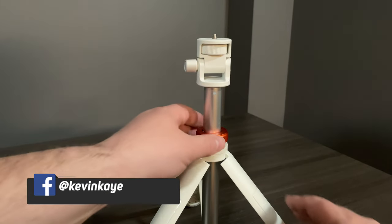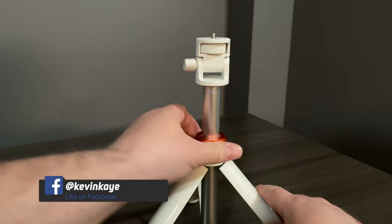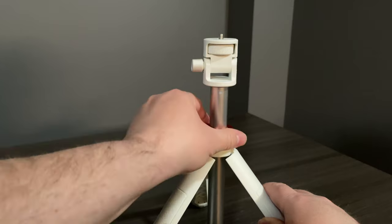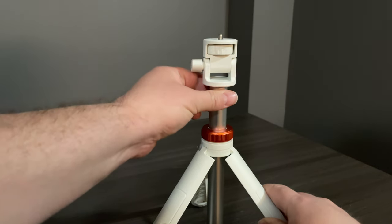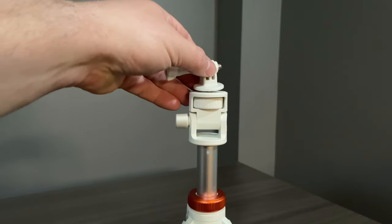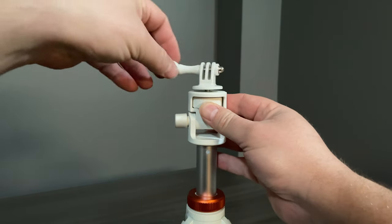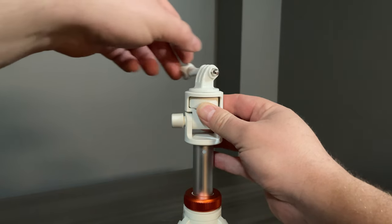Once we've got the stand at the height we'd like, we can just tighten the screw and this is going to hold in place. If you want to attach a GoPro, it's as simple as using the GoPro or Action Cam attachment that connects to that universal screw.